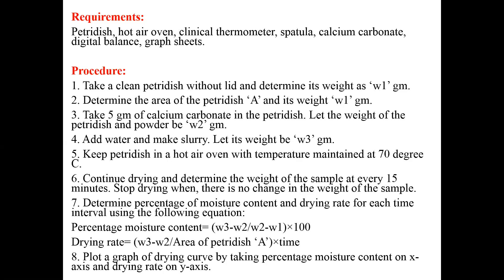Fifth, keep the petri dish containing the slurry in a hot air oven with temperature maintained at around 65 to 70 degrees Celsius. Continue the process and determine the weight of the sample at every 15 minutes. When a constant weight is obtained — meaning no change in weight — stop the drying process.